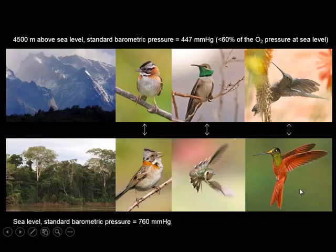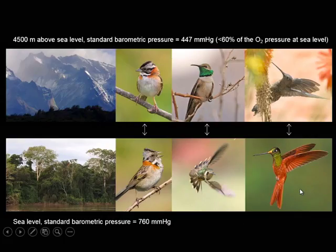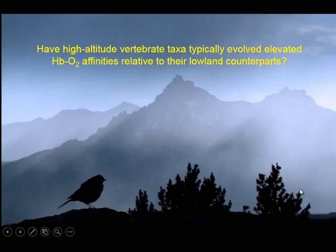So this is what we're doing. We're examining the molecular basis of convergence in hemoglobin function in comparisons involving phylogenetically replicated pairs of high- and low-altitude sister taxa, several of which are shown here. The first step is to test for evidence of convergence in hemoglobin function, and then the second step is to identify the causative mutational changes. For our particular system, as a first step we need to address a question of long-standing interest in comparative physiology: have high-altitude vertebrate taxa typically evolved elevated hemoglobin oxygen affinities relative to their lowland counterparts?